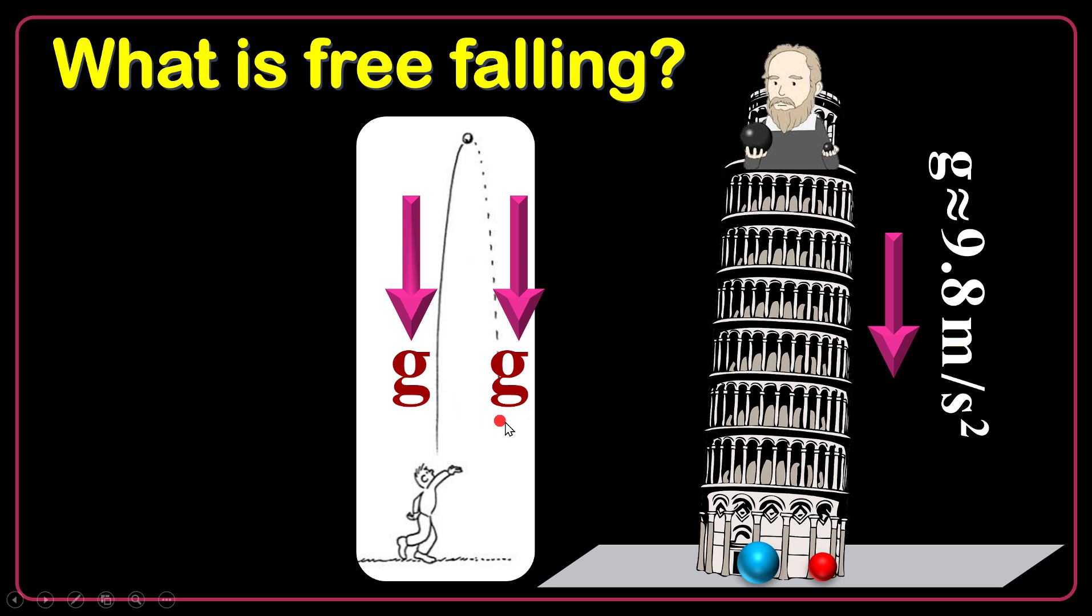So, gravitational acceleration is the same when the object is going up or when it's falling down. Even at the peak point. At the peak point, you know for a moment the object stops, but still it has the same acceleration.